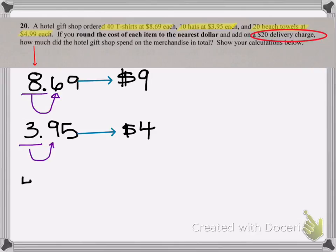Finally, the beach towels cost $4.99. I'm going to take the four, look one digit to the right to the nine. That means my four rounds up. So to the nearest dollar, the beach towels cost $5.00 each. Now that I've done my rounding, I'm ready to do my multiplication.